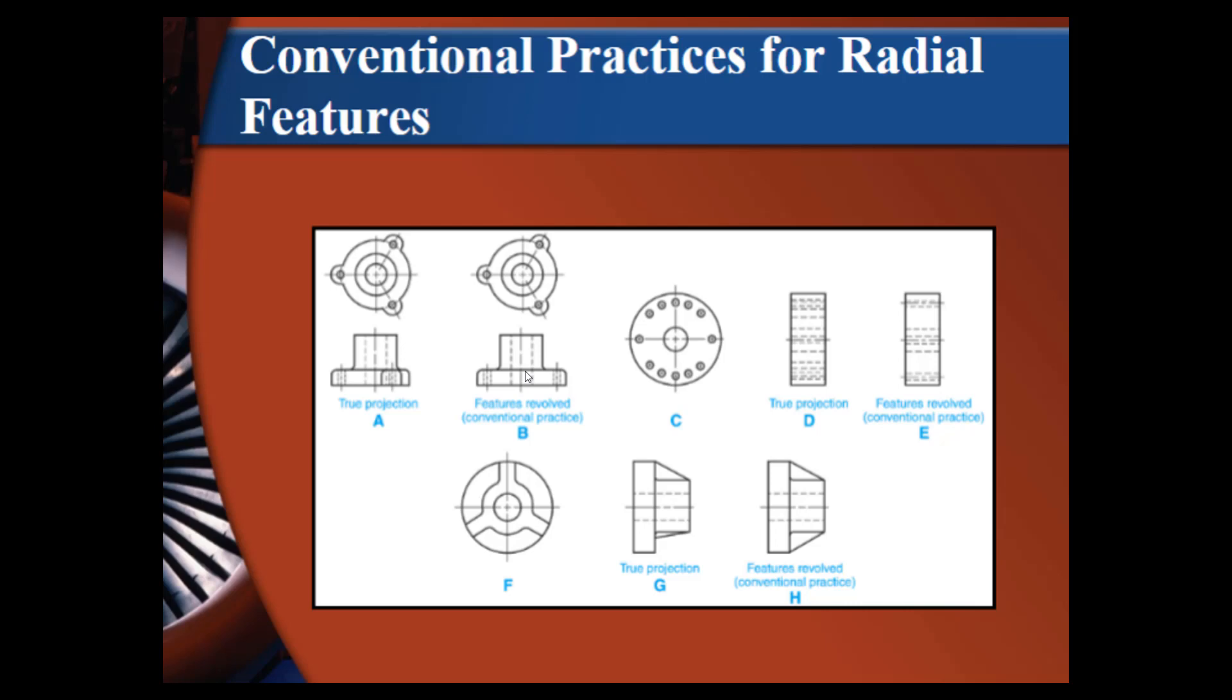These are radial features. This gets a little bit confusing. If you look at the A in the top left, that is the true projection of that part. And you can see it's very confusing on the drawing. So what we do on radial parts is we basically draw one side correctly, like on example B, we drew the left side correctly and we just mirror the other side. It's not a true projection, but the true projection is too confusing to figure out anyway. The same with C.